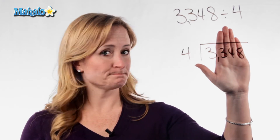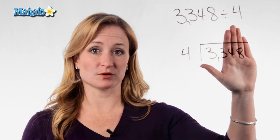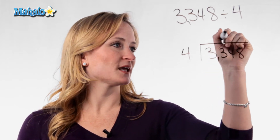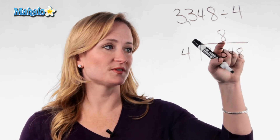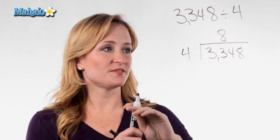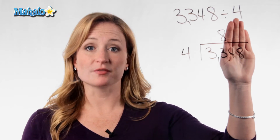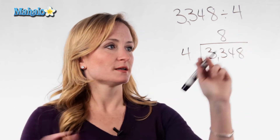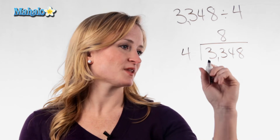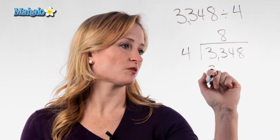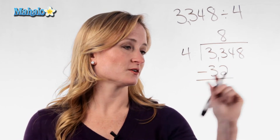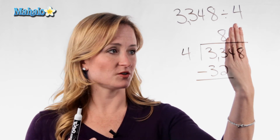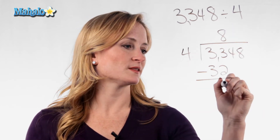Can 4 go into 3? Nope, so you move it over. Can 4 go into 33? Yep. How many times? 8 times. Now you're going to put that 8 above that second 3 because we're now talking about the 33. 4 goes into 33. Now multiply 8 times 4, and that's 32. And you're going to subtract — you're just subtracting that 32 from that 33. We have one left.